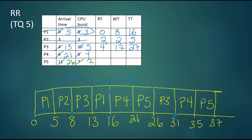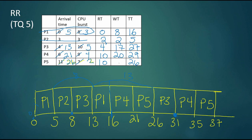P4 arrived at time six and first got on the CPU at time 16, with a response time of 10. P4 finished at 35, so it was active for 29 time units, and waited 20 of those. P5 arrived at time 11 and first got on the CPU at time 21, so P5 waited 10 time units. P5 finished at time 37, giving a turnaround time of 26, and a total wait of 19 time units (10 initially plus 9 more).